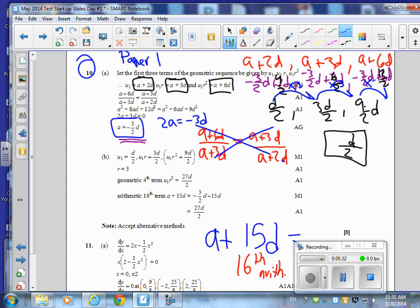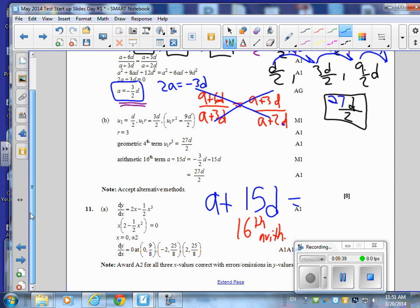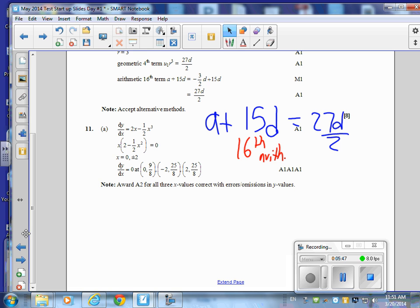So then this is just going to be what D? 27D. 27D over 2 is your fourth geometric term.